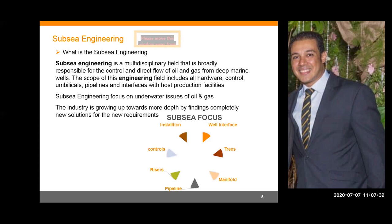This chart tells you what the focus or divisions of subsea engineering are. We have the well interface, trees, manifolds, pipelines, risers, controls, and installation. We take care of each and every part of this division and all associated items around it. The subsea is the structure and science that takes care of production of oil and gas to bring it from under the seabed towards the processing facilities on shore.